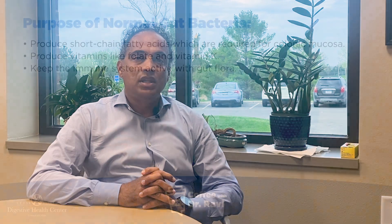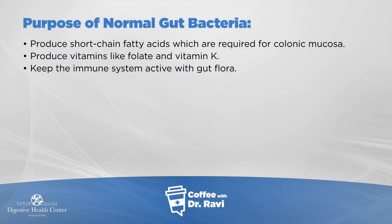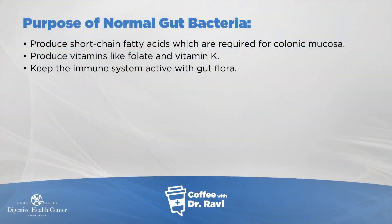The colonic gut bacteria serves certain functions, including producing short chain fatty acids, which are required for keeping the colonic wall healthy. When the fecal stream is diverted and the bacteria don't have the ability to break down normal food residue, inflammation can sometimes occur in the colon. The bacteria also produce vitamins like folic acid and vitamin K, and there's a robust interaction between our immune system at the gut level and the bacteria, which keeps us healthy and our immune systems active.